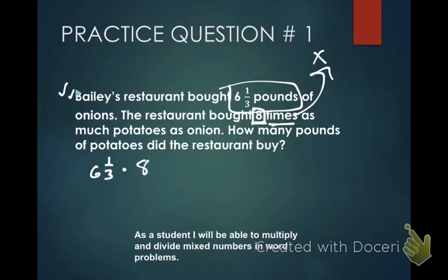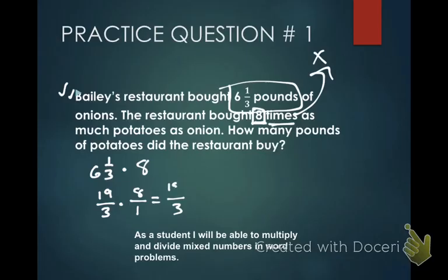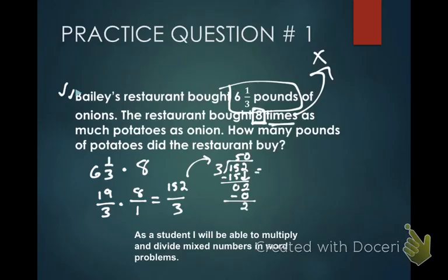This is simple — we've got to remember how to do these things. When we multiply fractions, the first thing we need to do is change them to improper. Six times three is 18 plus one is 19 over three. And eight is going to be eight over one. Can I pre-simplify anything? No, I cannot. So I need to simply multiply across. 19 times eight is 152, so we have 152 over three. It's an improper fraction, so I need to change it — divide. 152 divided by three: that's 50 remainder 2, so my answer is 50 and two-thirds.